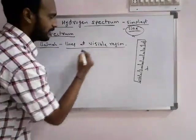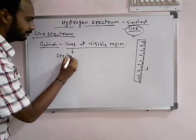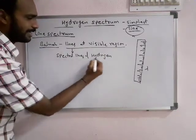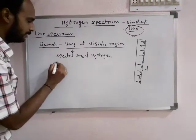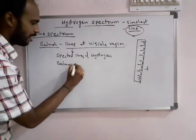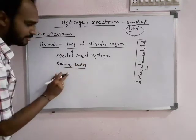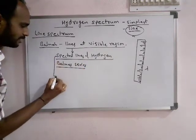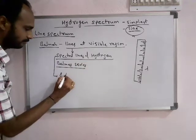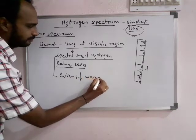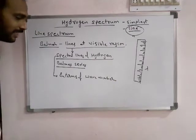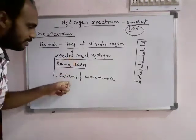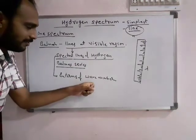Balmer also gave an equation. The spectral lines he observed are known as spectral lines of hydrogen, discovered by Balmer. The combination of those lines is called the Balmer series of lines, and they were first discovered by Balmer. He explained the spectral lines of hydrogen in terms of wave number — for different lines, he explained about the spectral lines in terms of their wave number, and he gave an equation to calculate their wave number.